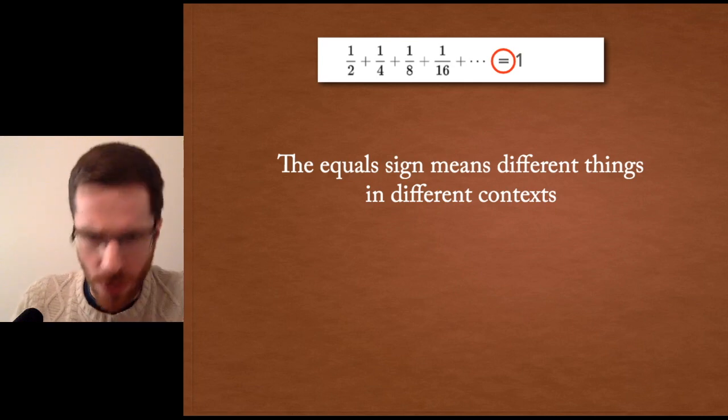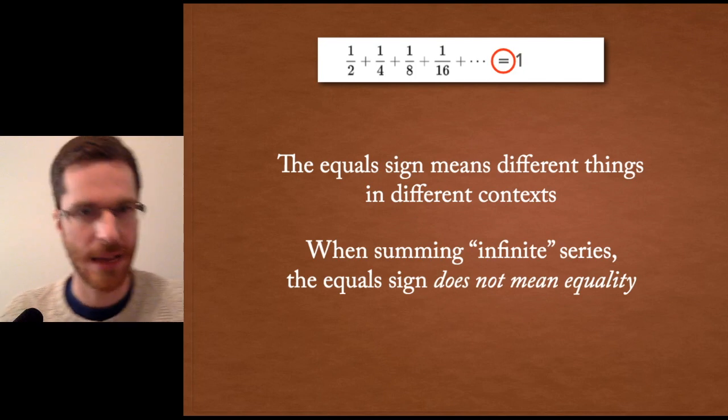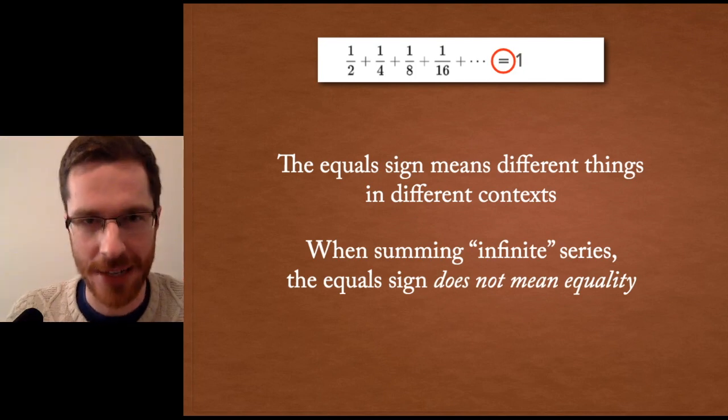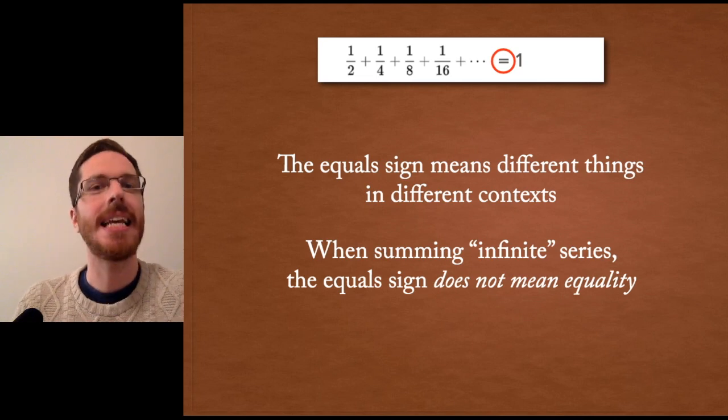There's this perfect identity between the numbers on the left hand and the numbers on the right hand. What is two? Well, it is the same thing as one plus one. In this context, when you're talking about summing an infinite series.